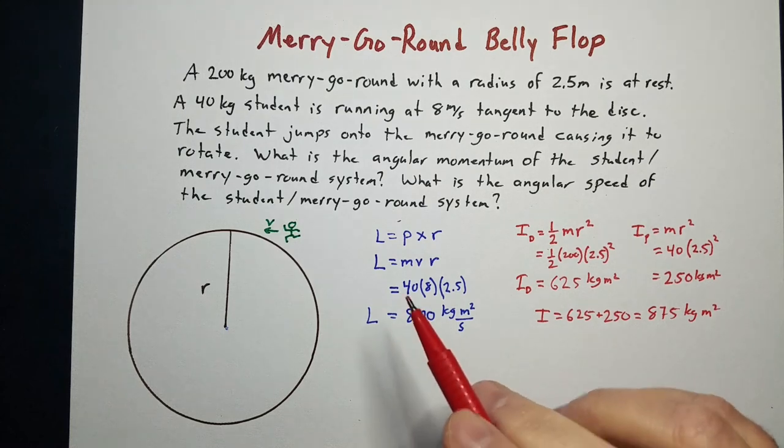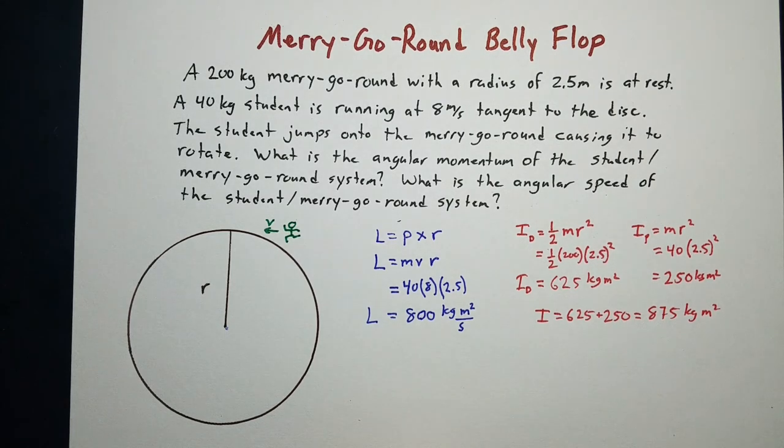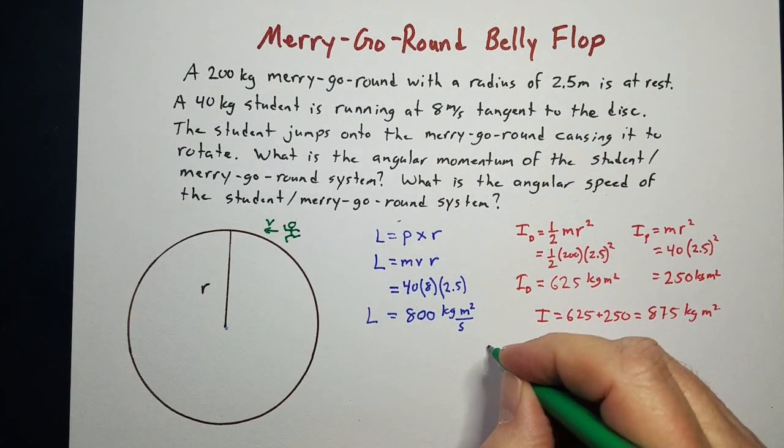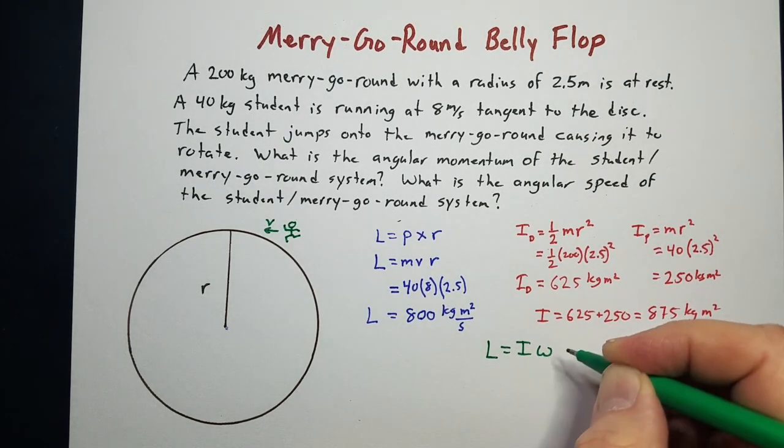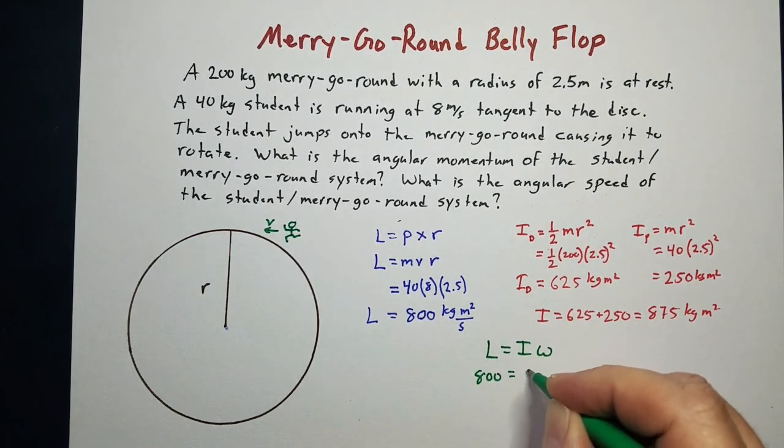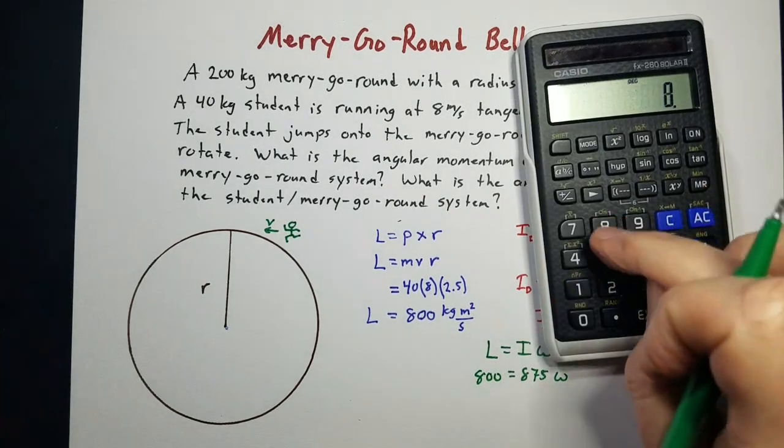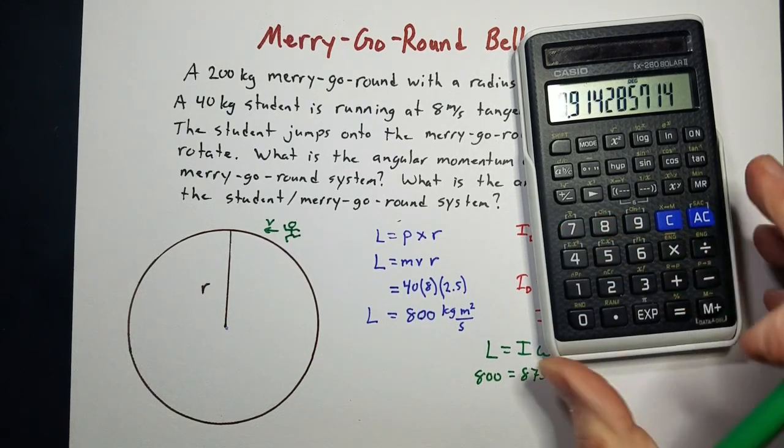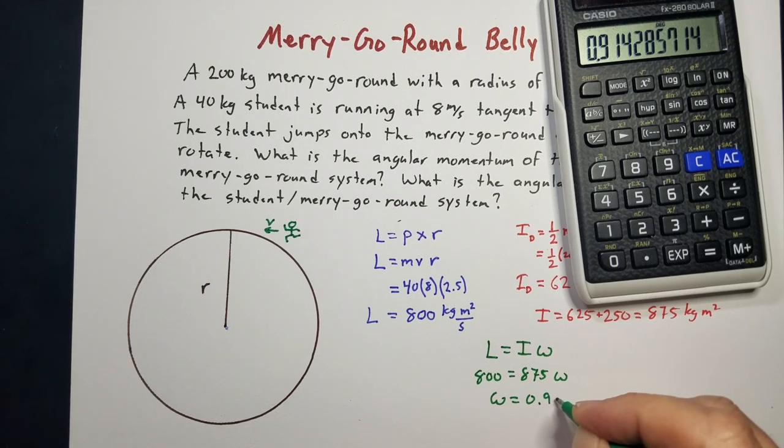Well, now since we know the moment of inertia and we know the angular momentum, we can figure out the angular speed by doing this. Angular momentum is equal to the moment of inertia times the angular speed. This is 800, the moment of inertia of our system is 875, and we have to figure out omega. So 800 divided by 875 gives me an angular velocity or angular speed of 0.91 radians per second.